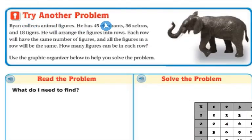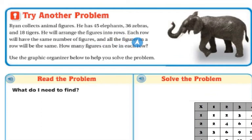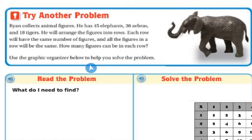Let's try another problem. Ryan collects animal figures. He has 45 elephants, 36 zebras, and 18 tigers. He will arrange the figures into rows — each row will have the same number of figures, and all of the figures in the row will be the same. How many figures can be in each row? Use the graphic organizer below to help you solve the problem.